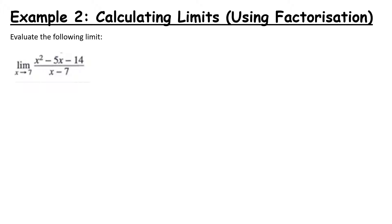Evaluate the following limit: the limit as x tends towards 7 of x squared minus 5x minus 14 all over x minus 7. The reason we have to use factorization is because if we substitute in x as 7, the denominator would be 7 minus 7, which gives us 0. It is really, really important to remember that you cannot divide by 0.